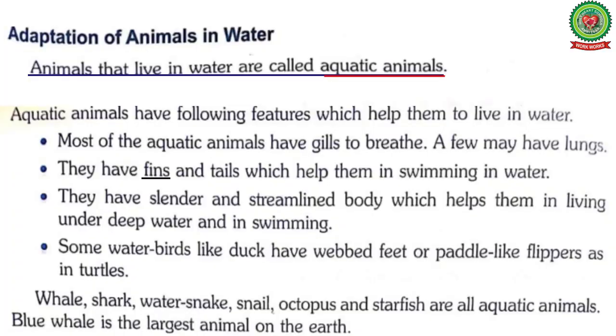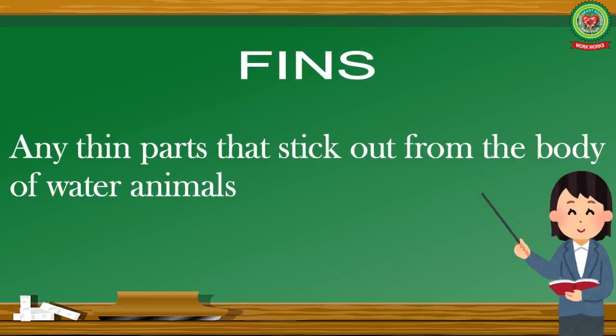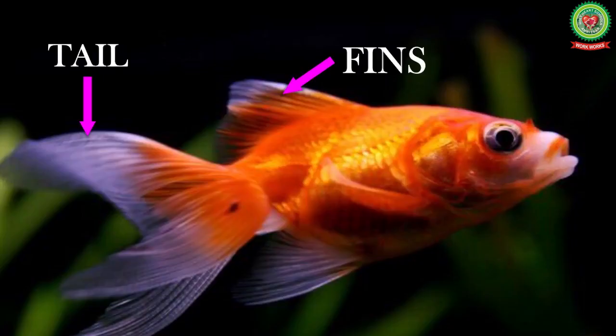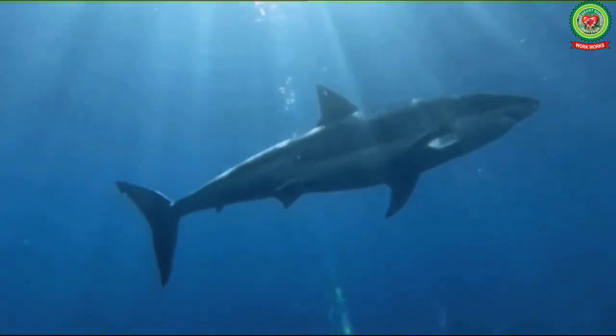They have fins and tails which help them in swimming in water. Underline the word 'fins' and write down its meaning: any thin parts that stick out from the body of water animals. Fins and tails help aquatic animals to swim inside the water.